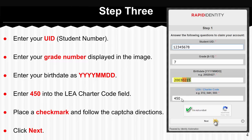The last field here asks for your LEA charter code, and you're going to enter 450, because 450 indicates that you are a student in Henderson County Public Schools. Then on the bottom you're going to see a CAPTCHA field. What you're going to do is put a checkmark in the 'I'm not a robot' field.